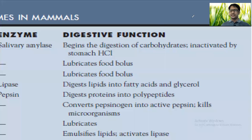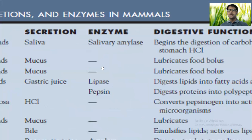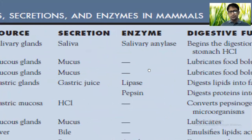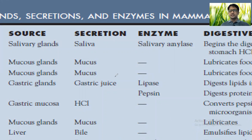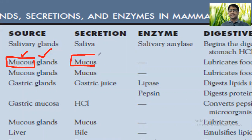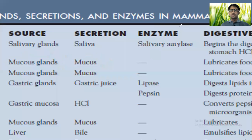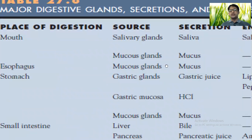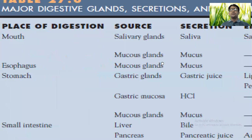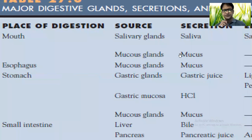Salivary amylase is inactivated by the stomach because its optimum pH is 6.8, while the stomach is highly acidic at around pH 2. Mucous glands produce mucus secretion — spelled M-U-C-O-U-S — which is a glycoprotein secretion. Mucous glands are present in the esophagus and the buccal cavity, as well as throughout the small and large intestines, where they lubricate the digestive tract.